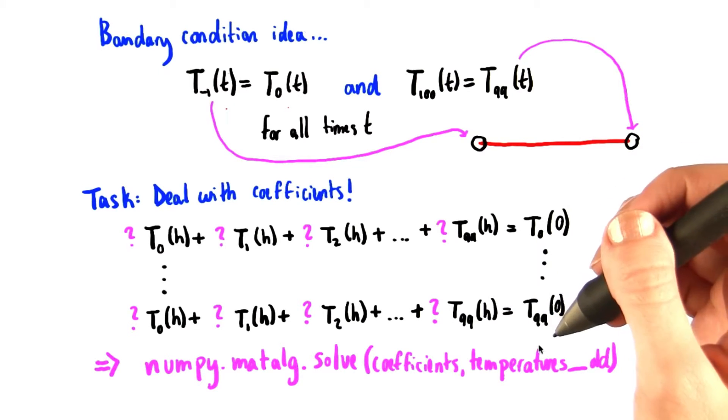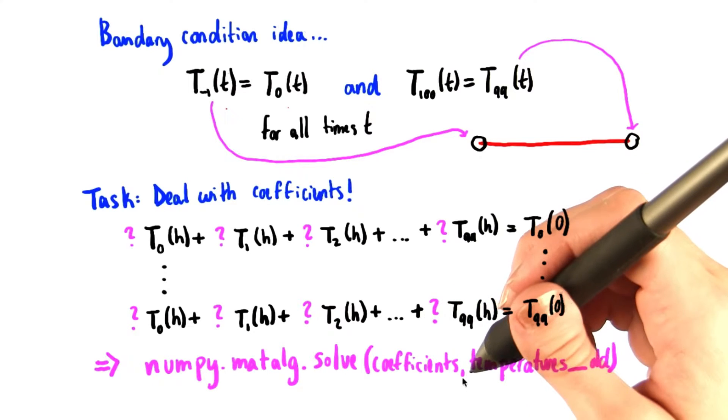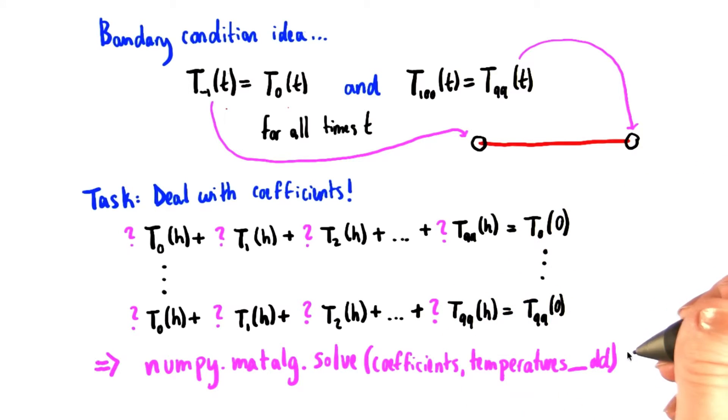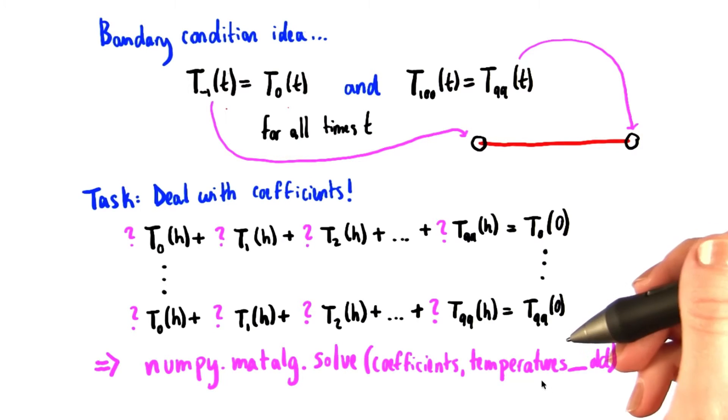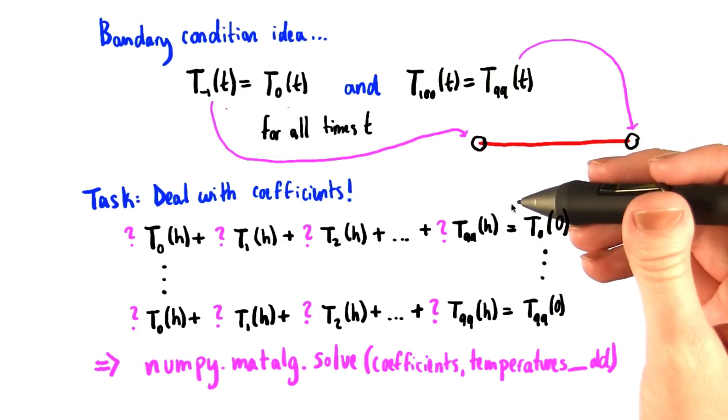Since we already know the temperatures at time zero, and you will have created a matrix of coefficients, we can use this method, numpy.matmul.solve, and input the known information, and solve for the vector that we want, the one containing the temperatures after time step h.